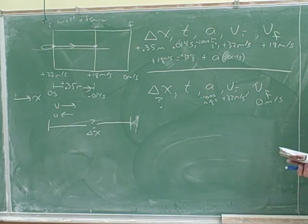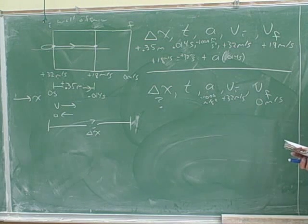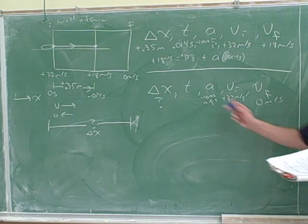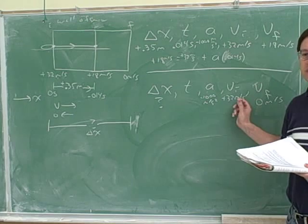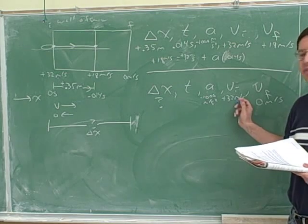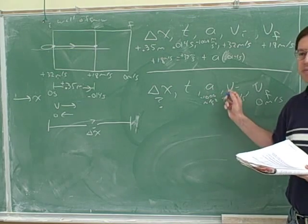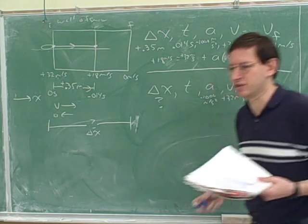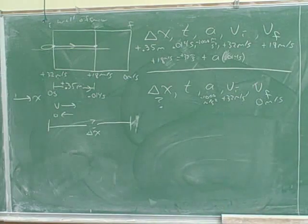You can use vf squared equals vi squared plus 2a times delta x. Now we have three numbers. Once we have three numbers, we're ready to use a kinematics equation.